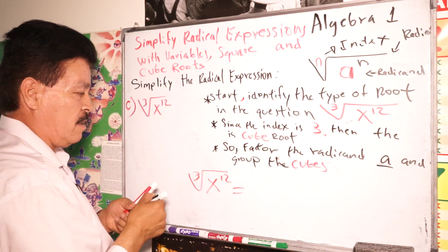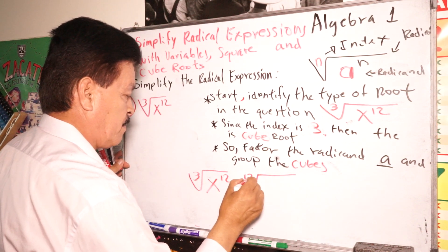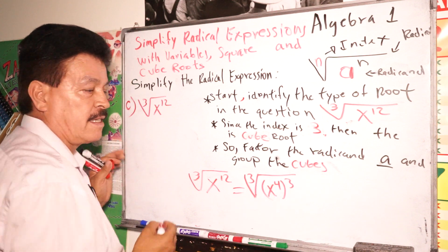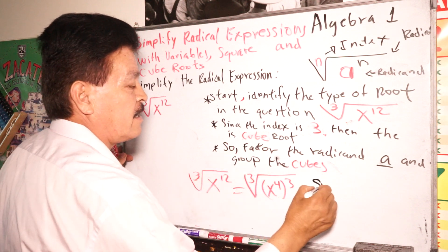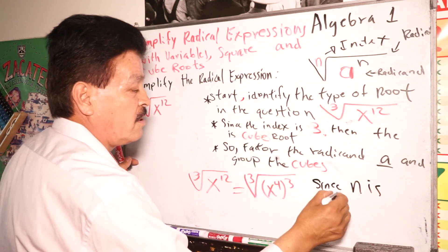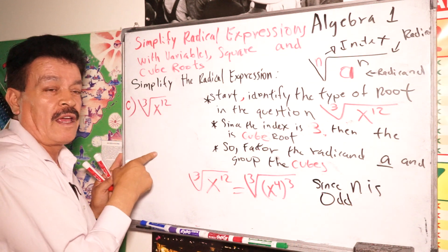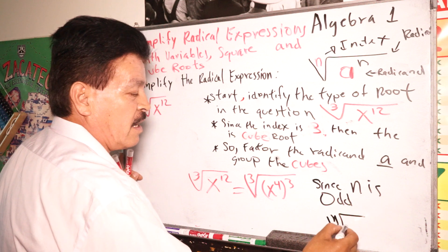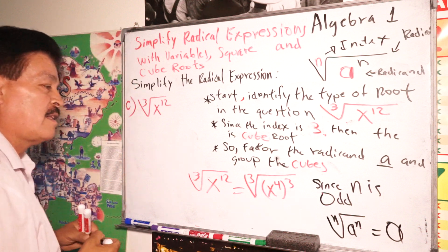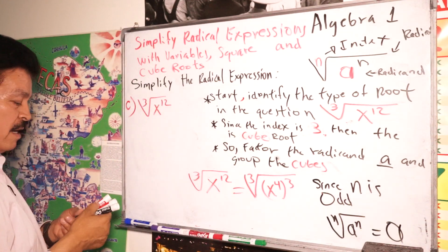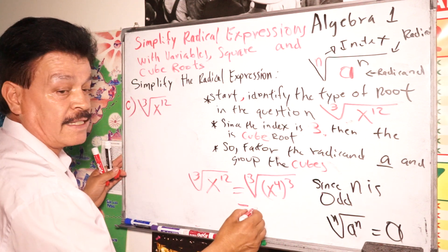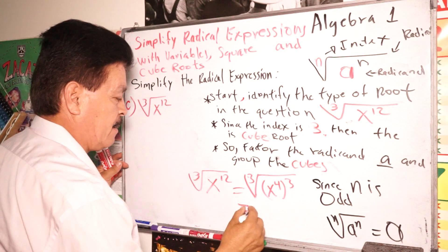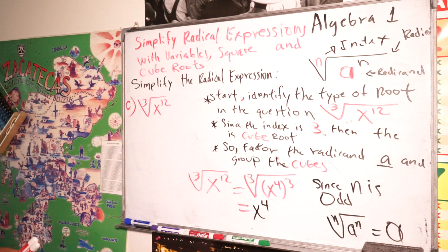We factor: x to the 12th equals x to the fourth, cubed — that is, (x⁴)³. The observation is: since N is odd, remember — the rule for odd index says the result equals A without the absolute value. So the answer is x to the fourth power.